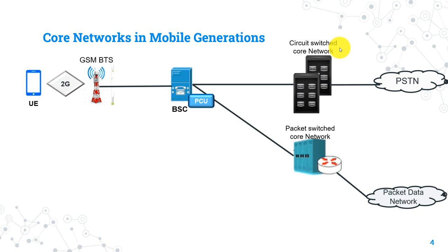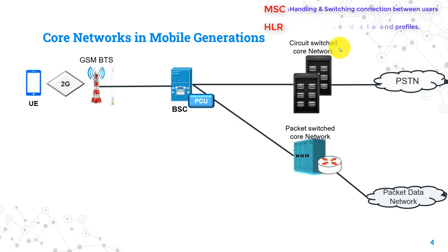The main nodes in circuit switching core networks are: MSC, Mobile Switching Center, whose main function is handling and switching connections between users. The second main node is HLR, Home Location Register, and its function is to store all the subscribers' data and profiles, including all the related services that the subscriber subscribed in.